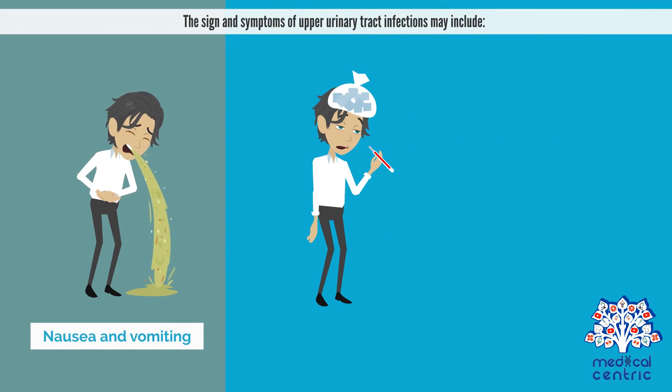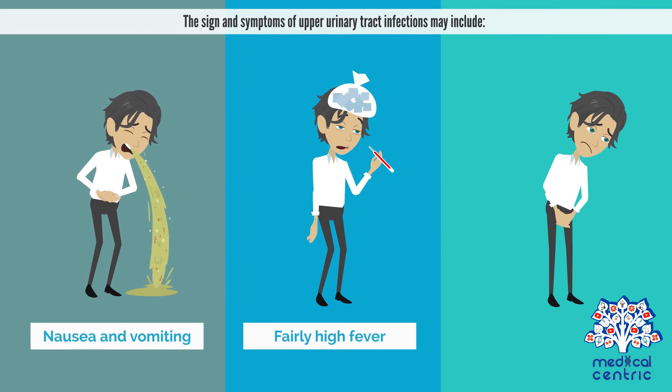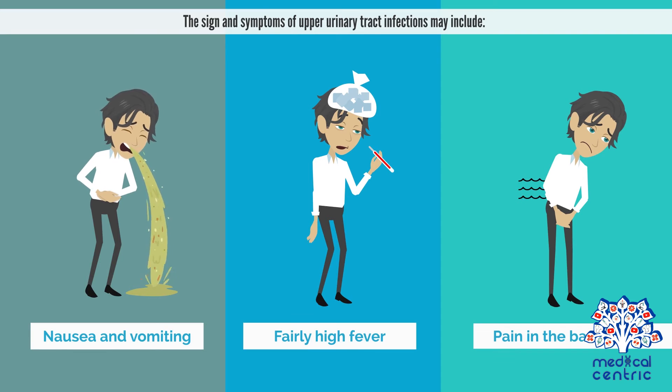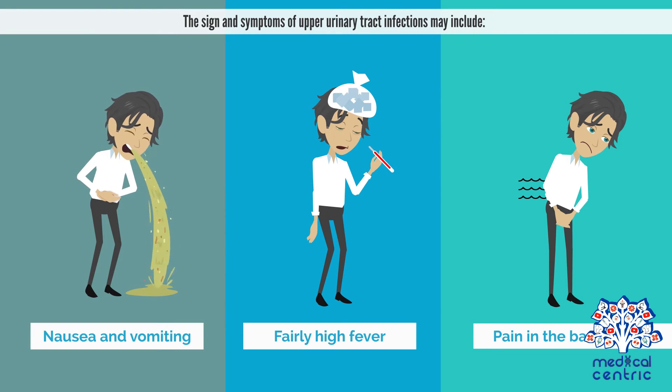The signs and symptoms of upper urinary tract infections may include nausea and vomiting, fairly high fever, and pain in the back or side.